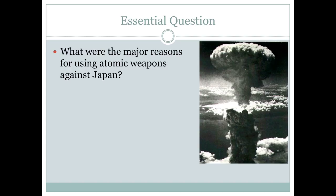The essential question is: what were the major reasons for using atomic weapons against Japan? Pages 779 to 782 in the textbook will give you the answers. It starts at the subheading 'The Manhattan Project,' because this was known as the Manhattan Project. Again, that's pages 779 to 782.